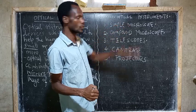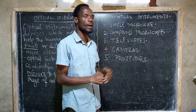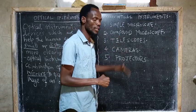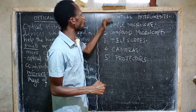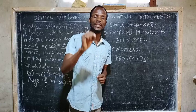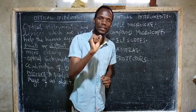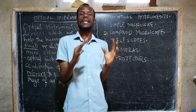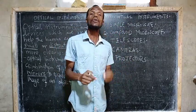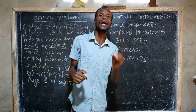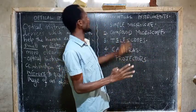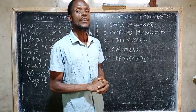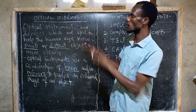We are going to start with a simple microscope, followed by compound microscope, and then telescope. We also have cameras and projectors. All of these are the common optical instruments we will be discussing, understanding how to use them in our daily life, and calculating values involved with each optical instrument. That is all about the introduction to optical instruments.